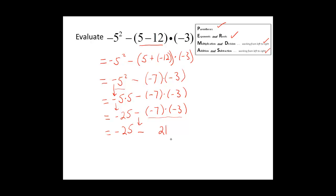Negative 25 minus 21. We will change this problem to an addition problem by adding the opposite. We are adding negative 25 plus negative 21. The signs are the same.